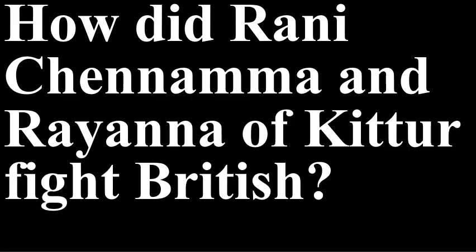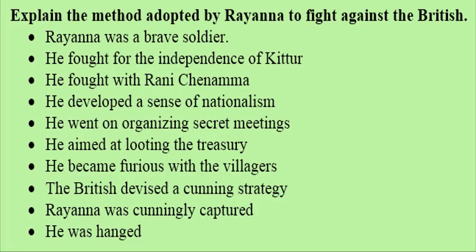How did Rani Channamma and Sangolli Rayanna fight against the British? Rani Channamma adopted a boy called Shivalingappa after the death of her husband and son. The British objected, and Colonel Thackeray declared war against Channamma, but Channamma killed Thackeray. In the absence of Rani Channamma, Rayanna continued to fight against the British. He was a brave soldier who fought for the independence of Kittur.